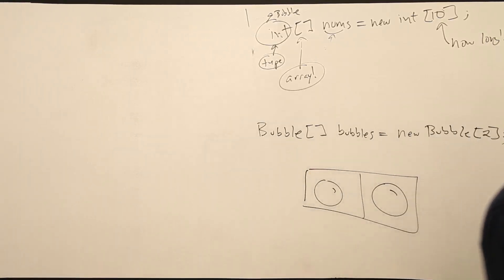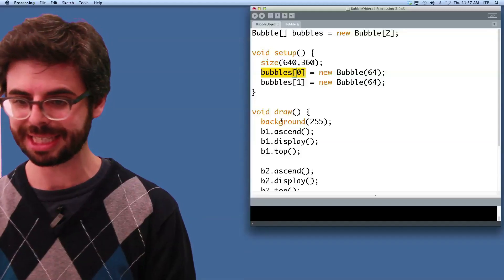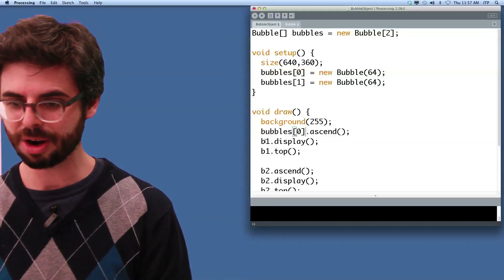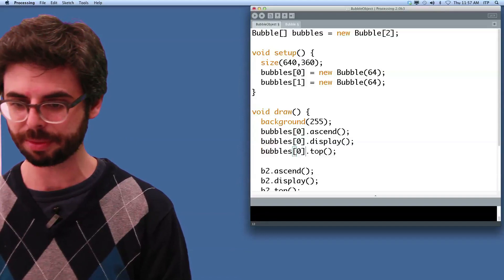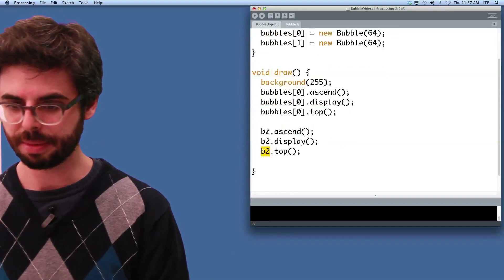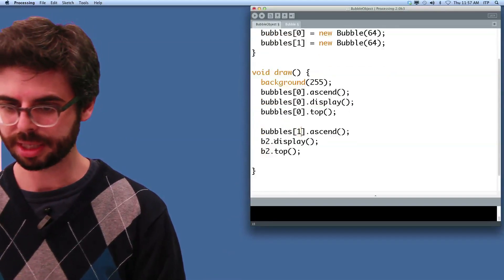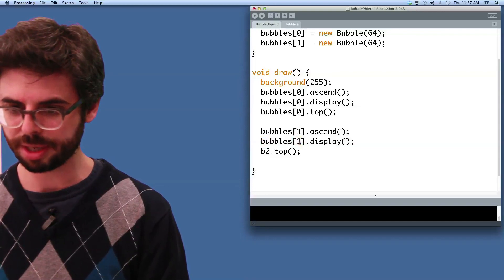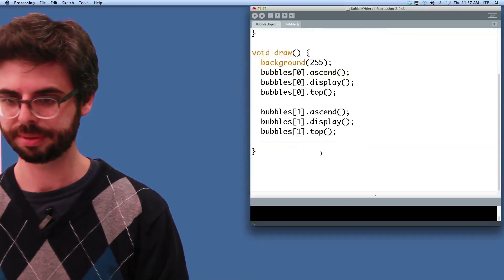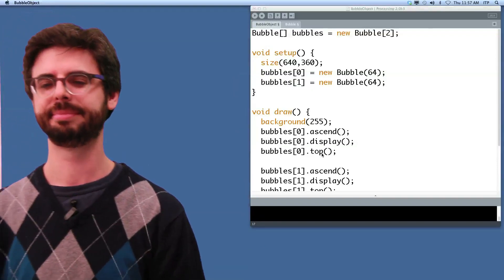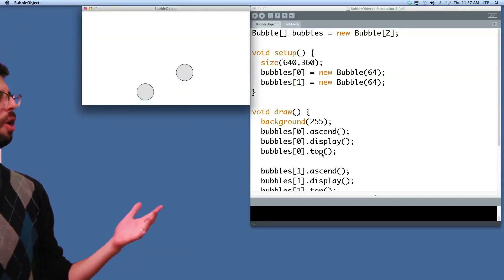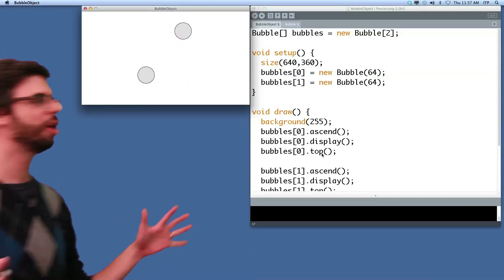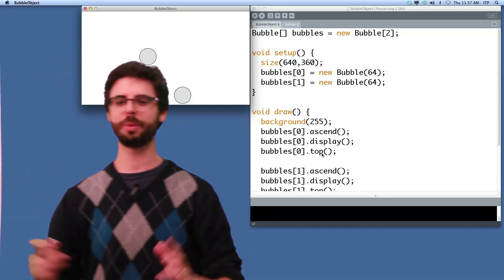Okay, so what do we do now? We need to take this idea and say bubbles zero ascend, bubbles zero display, bubbles zero top. Bubbles one ascend, bubbles one display, bubbles one top. There we go. We have the identical program, just what we had before.